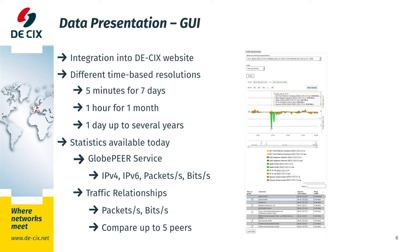As you can see in the picture, we have two different views to choose from: bits per second or packets per second, including the option to choose between IPv4, IPv6 or both, and a comparison of up to 5 peers.